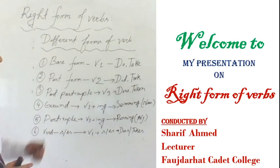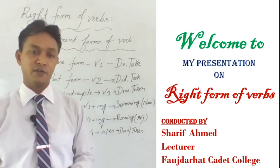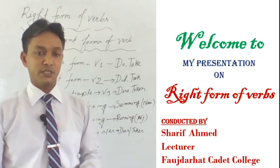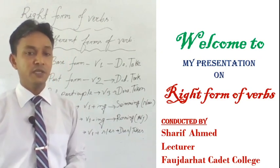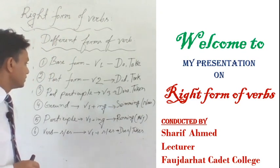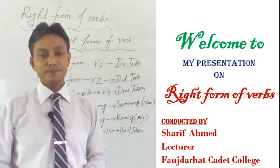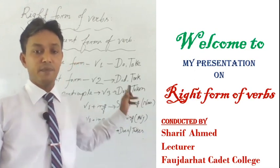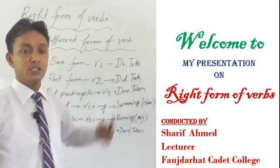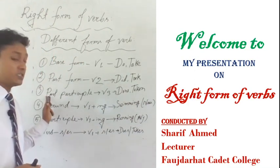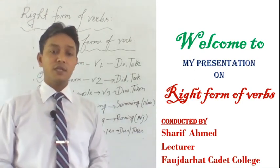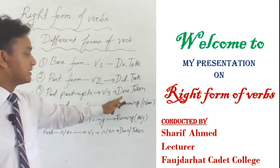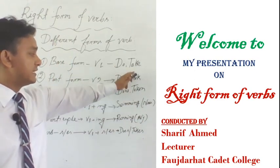Number one: base form. We also call it the present form of verb, like do, take, go, etc., and we call it V1. Number two: past form. We call it V2, and the past form of the word 'do' is 'did' and the past form of the word 'take' is 'took'. Number three: past participle form, and we call it V3. The past participle form of the verb 'do' is 'done' and the verb 'take' is 'taken'.